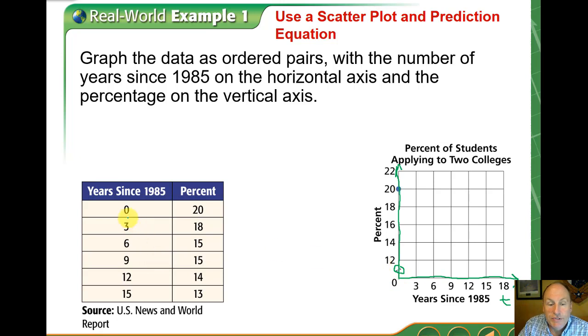We're going to plot the point 0 comma 20. Start at the origin, move up 20. That's our first data point. The next data point is 3 comma 18. Then we're plotting 6 comma 15 and so on.